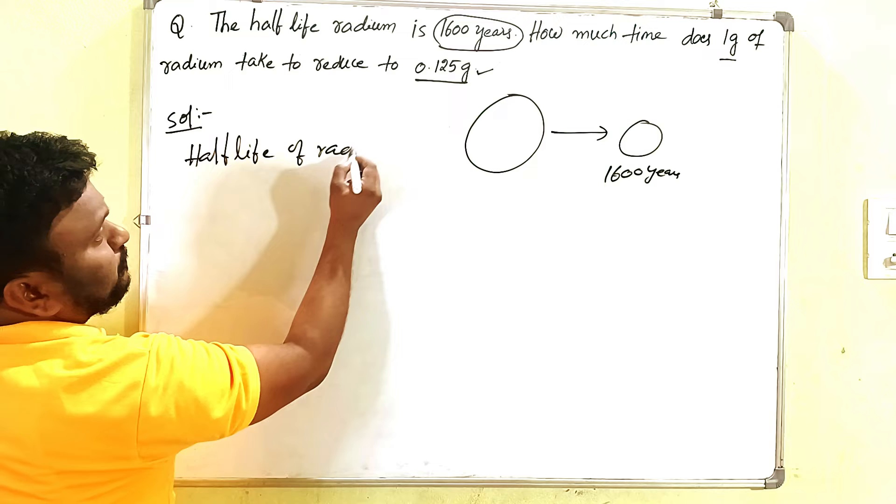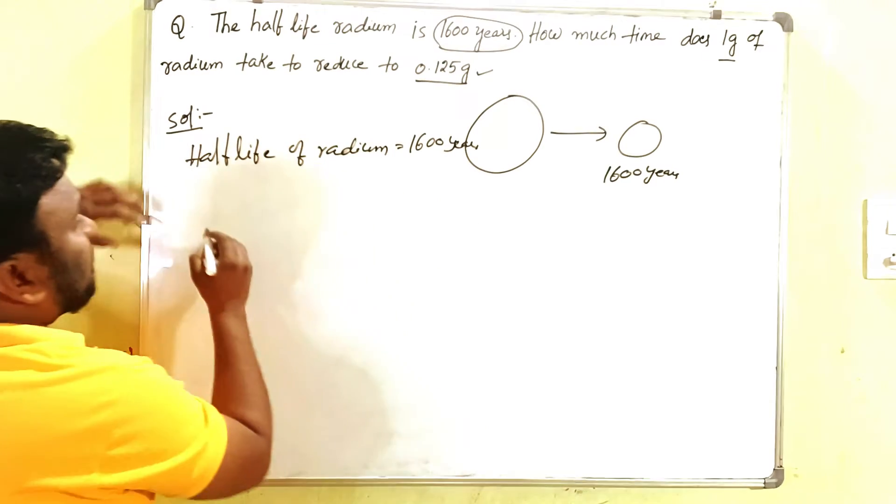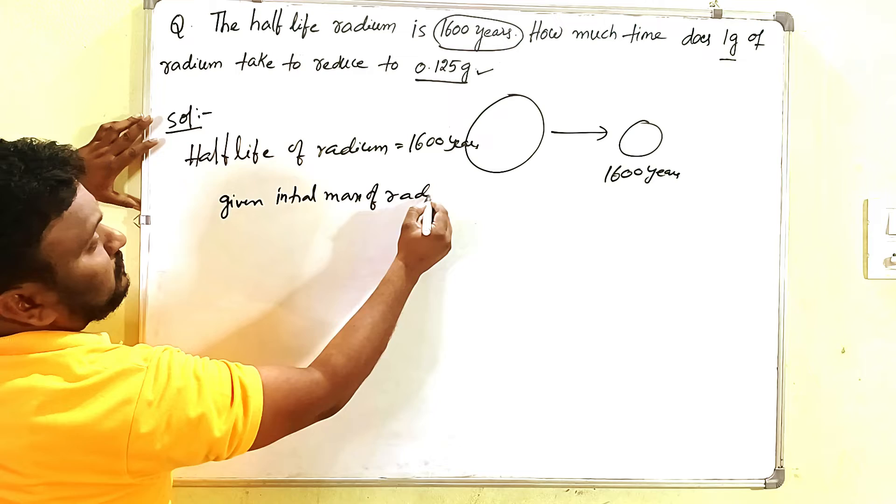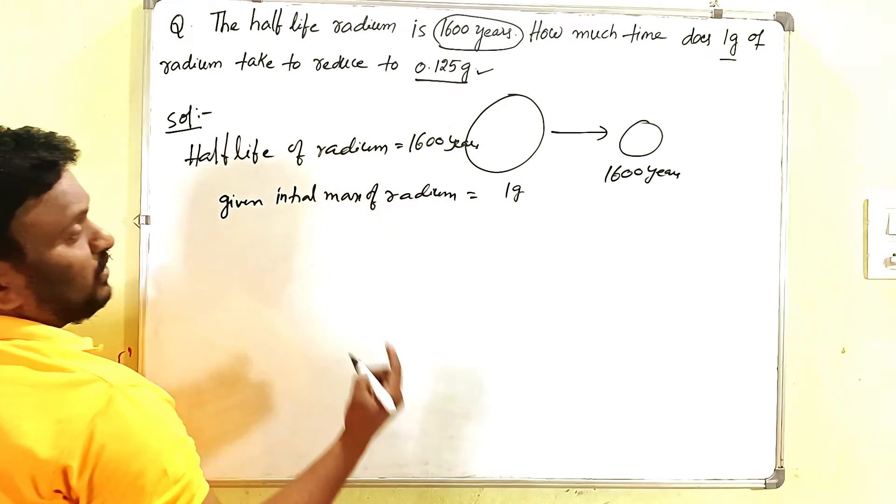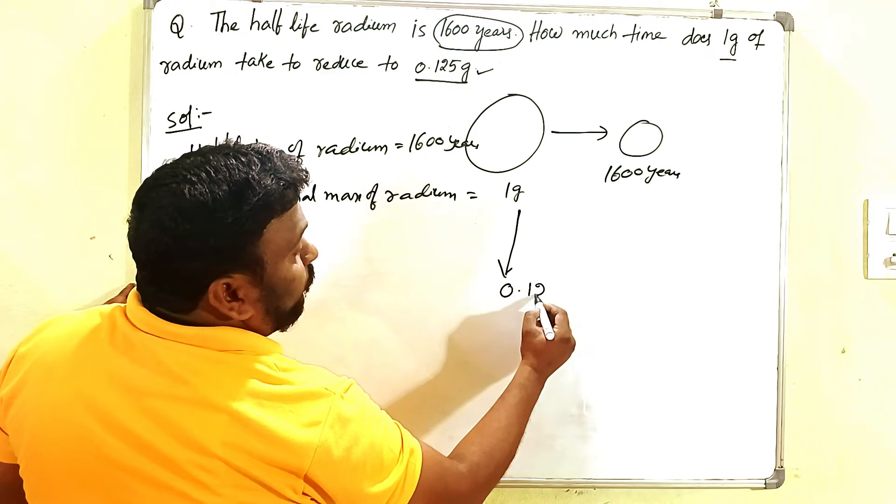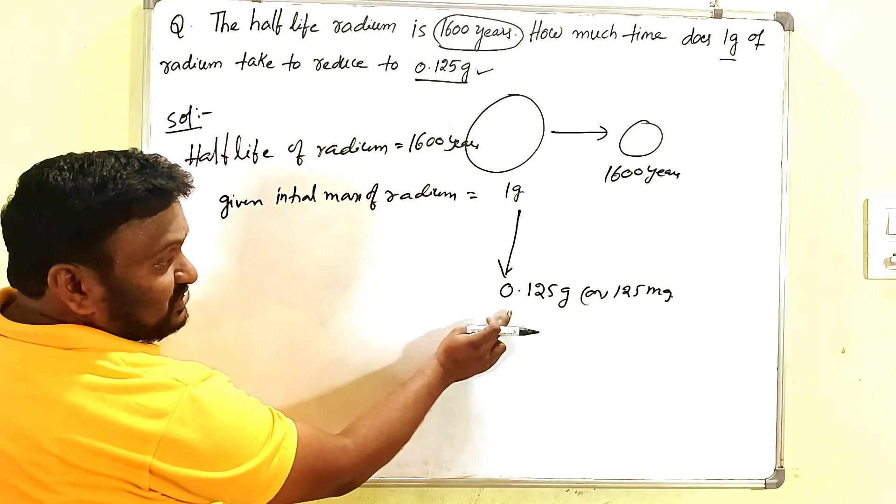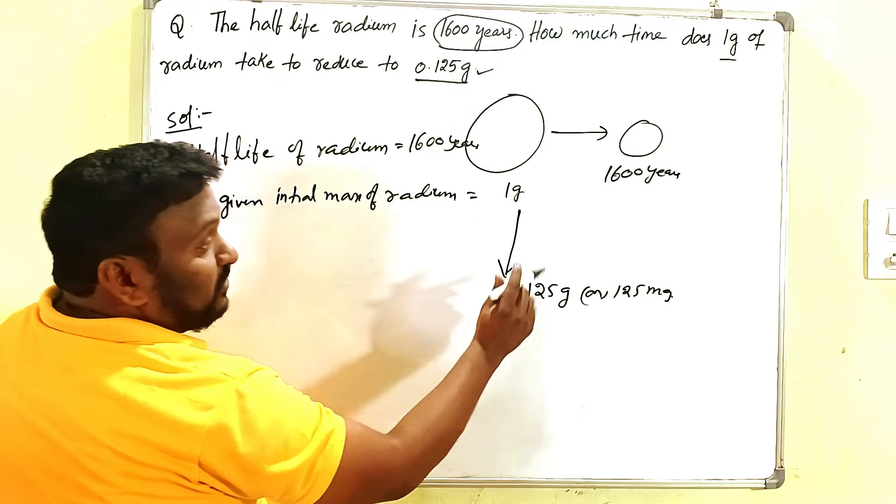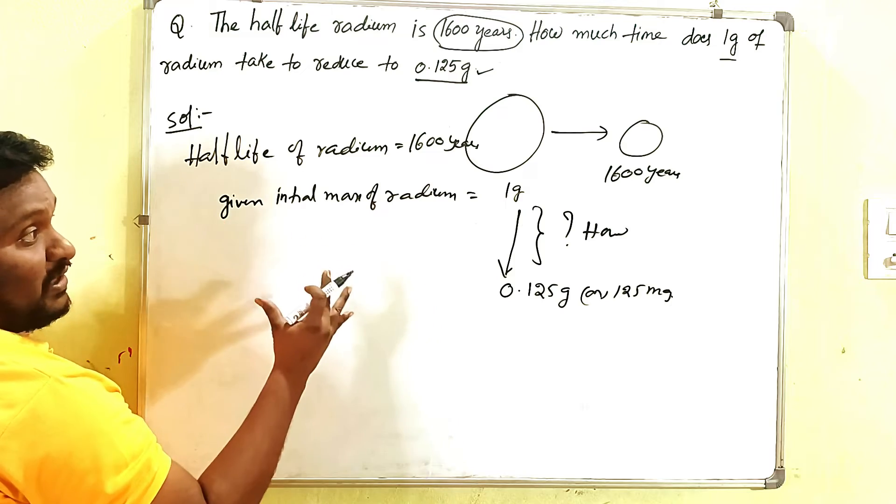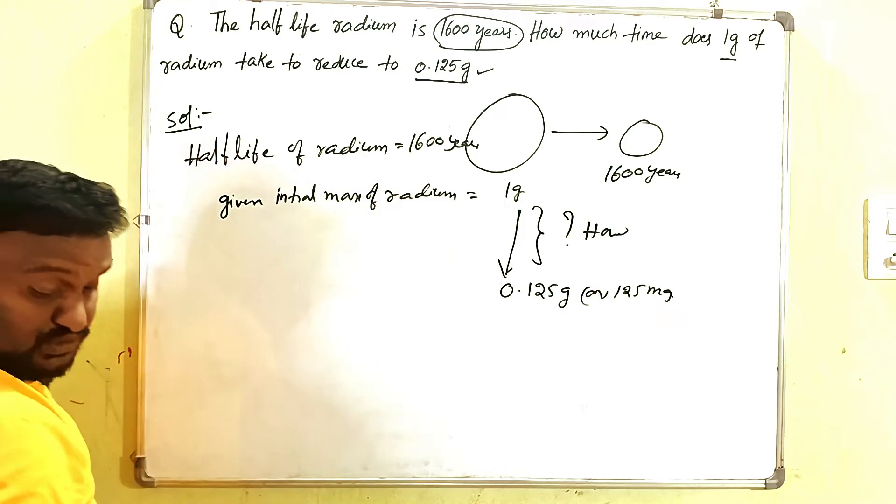So what is given? Half-life of radium is 1600 years, such that we have one gram of radium. Given initial mass of radium is how much? One gram. One gram must disintegrate or decrease in size up to what? 0.125 grams or 125 milligrams. One gram should be decreasing to the level of that mass.